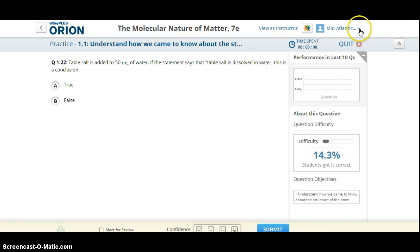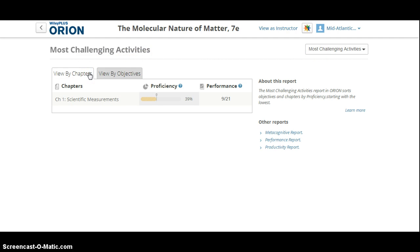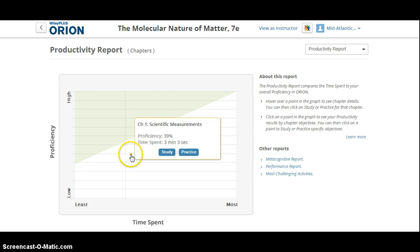Students also have access to the same type of reports that instructors do that gives them that pinpointed efficient idea of where they need to focus their energies. So this is the most challenging activities report, productivity report, again, this is for a single student. So as they work within Orion some more, more questions answered will populate more insightful data.